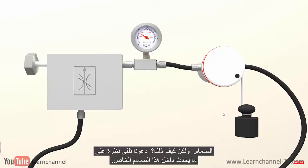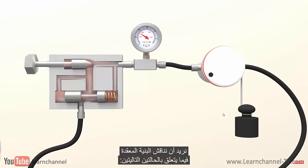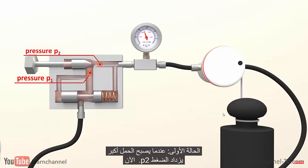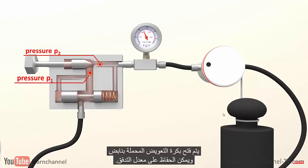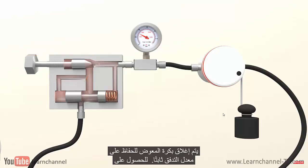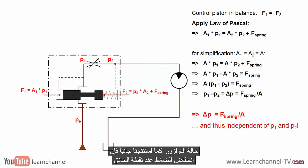But how does it work? Let's have a look at what happens inside this special valve. We discuss two cases. First case: when the load becomes bigger, the pressure P2 increases, and the spring-loaded compensator spool opens so the flow rate can be maintained. Second case: the load becomes smaller, so pressure P2 decreases, and the compensator spool closes to keep the flow rate constant. In the schematic view, when the control piston is in balance, the pressure drop at the throttle point is independent of pressure P1 or P2, but of constant value — which means the flow rate must be constant.